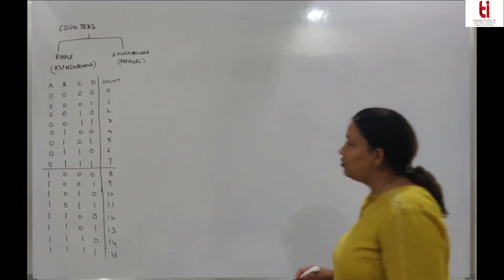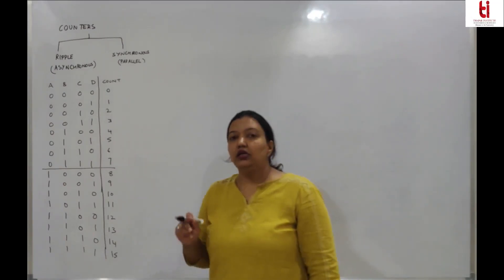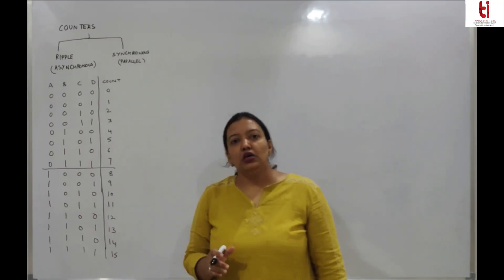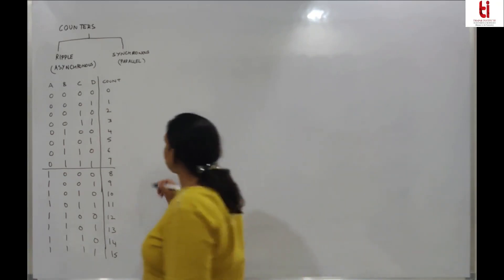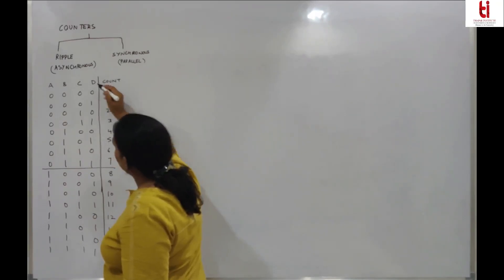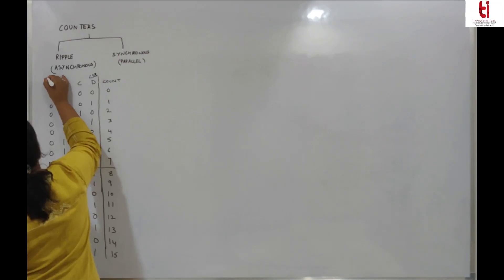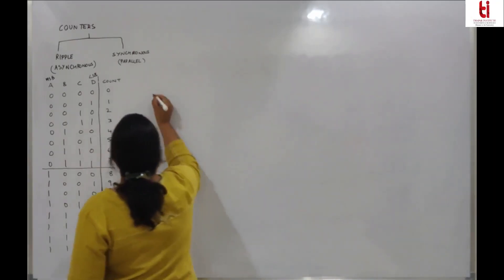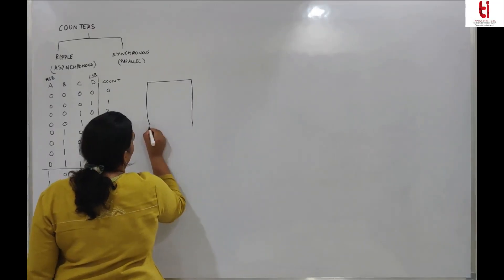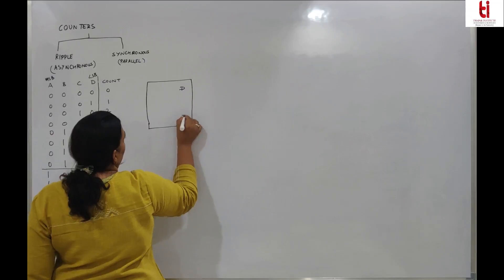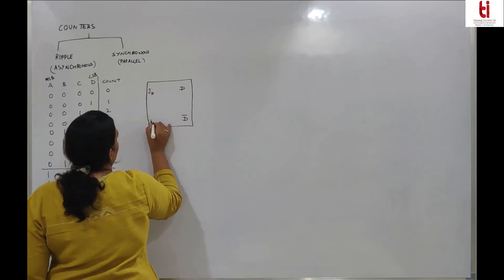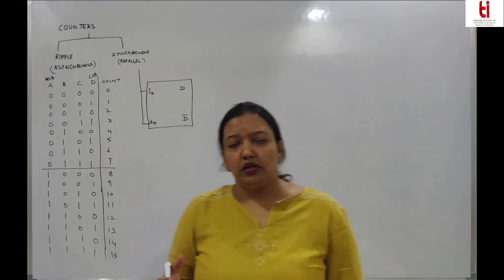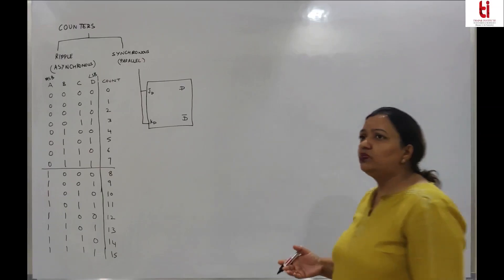We have two types of counters. In an asynchronous counter, all the flip-flops are not synchronized with the clock. The output of one flip-flop clocks the next flip-flop. D is the LSB and it is toggling on every clock pulse. We can make use of a JK flip-flop or any other flip-flop.